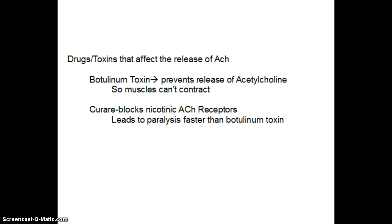Whenever we talk about neurotransmitters, students are always interested in what drugs or toxins work through those neurotransmitters. Drugs or toxins that affect the release of ACH include botulinum toxin, which is found in some spoiled foods. It prevents the release of acetylcholine, so the muscles can't contract. You may also be aware of Botox — that's the whole point of how it works, because the message is not getting sent. My brain says to furrow my brow, but the acetylcholine isn't released, so it doesn't talk to the muscle, the muscle doesn't contract, and my forehead stays nice and smooth.